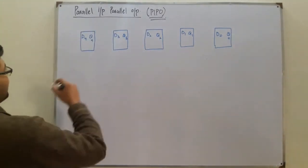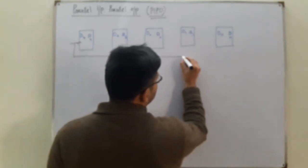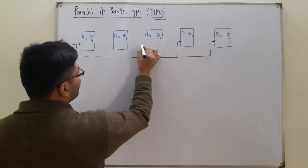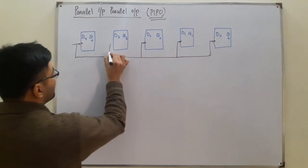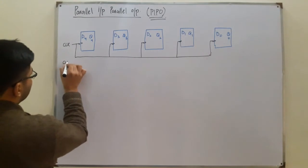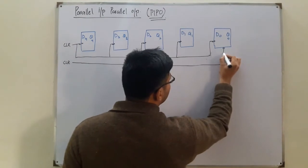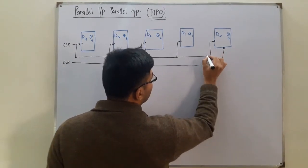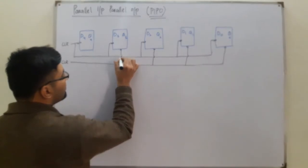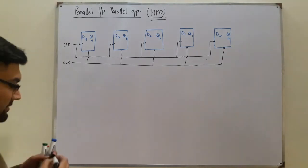The clock pulse is provided simultaneously to all flip-flops. These are negative edge triggered flip-flops. The clear signal is also provided to all of them.